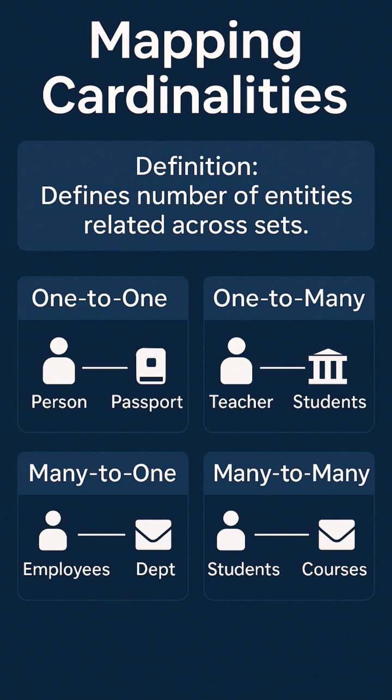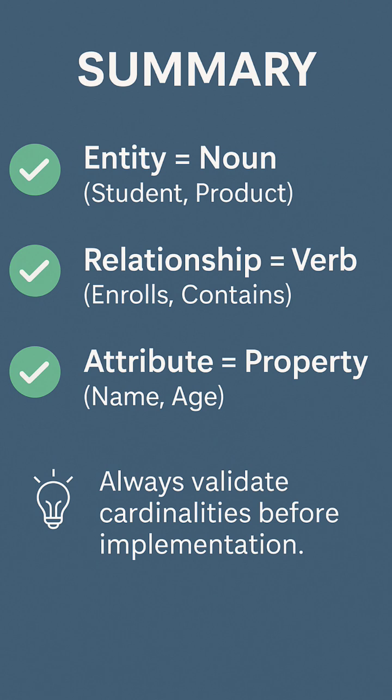In a real-life e-commerce system, entities like customer, order, product, and payment work together. A customer places many orders, and each order can contain multiple products.